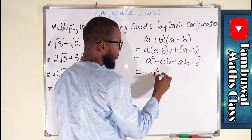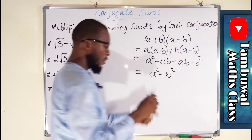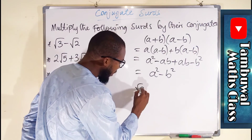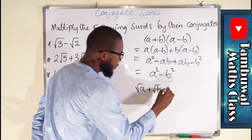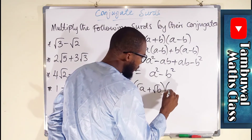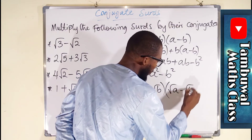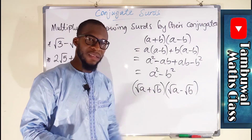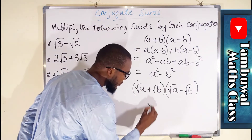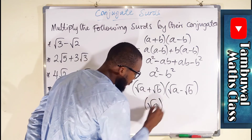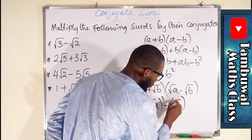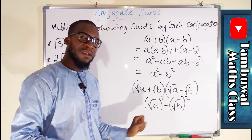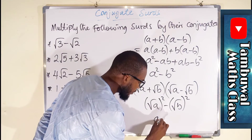The same thing is applicable to surds. If you have (√a + √b) multiplied by (√a − √b), you can see they only have a difference of sign but all the surds are exactly the same. This is the same as (√a)² minus (√b)², which is a difference of two squares. The square will always cancel the square root, leaving a minus b.